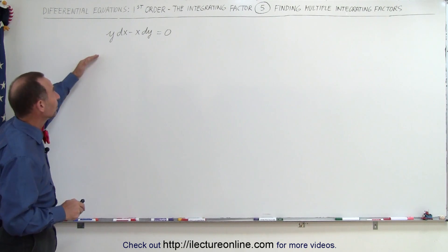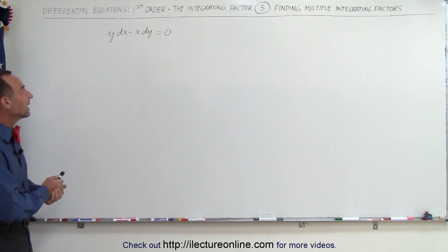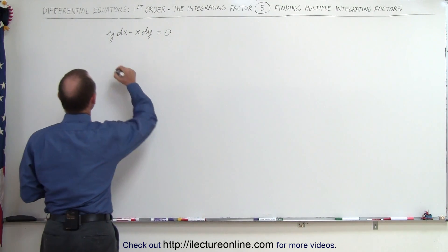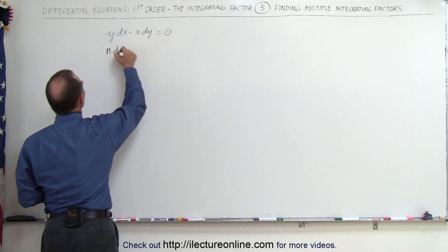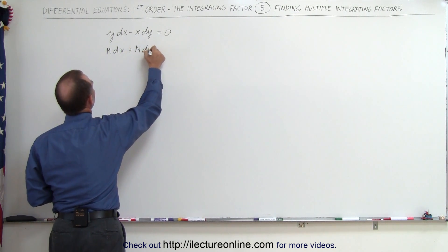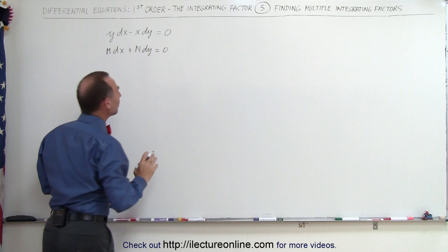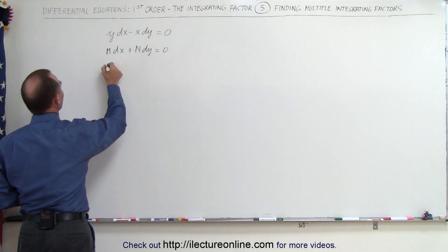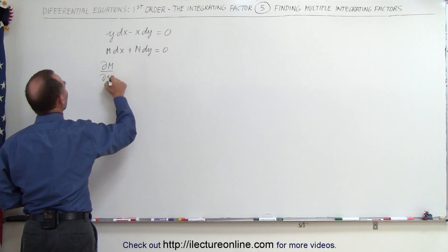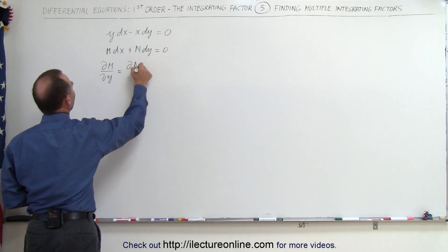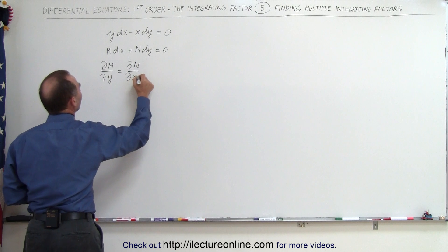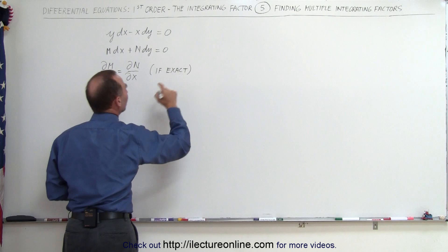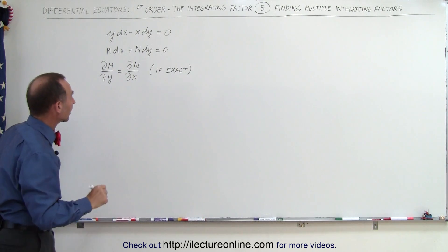Let's go ahead and use a simple example. We have the differential equation y dx minus x dy equals 0. Remember that this is in the format of M dx plus N dy equals 0. And we know that for this equation to be exact, the partial of M with respect to y must equal the partial of N with respect to x.